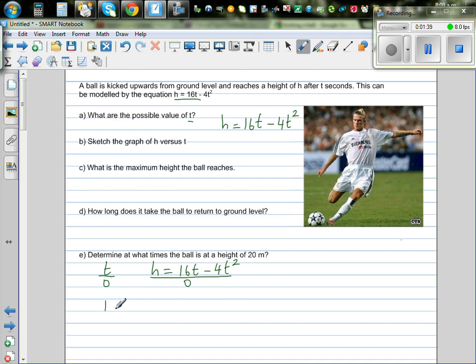After one second, I will put 1 in place of t. So this will be 16 times 1, minus 4 times 1 squared. So which is 16. First, you have to simplify this first. So this is 16 minus 4, which is 12. So after one second, what does it mean? 16 minus 4 is 12. So after one second, the ball was 12 meters high.